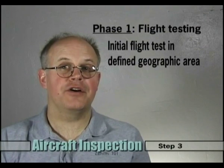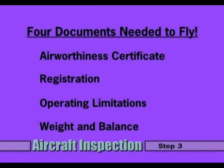The operating limitations document is unique in that it has two phases. The first phase requires that you fly your new home-built in the test area — remember that you requested this when filling out the program letter. Once you have acquired all four of these documents, you are able to fly your home-built. You can remember these four documents with the acronym AERO.